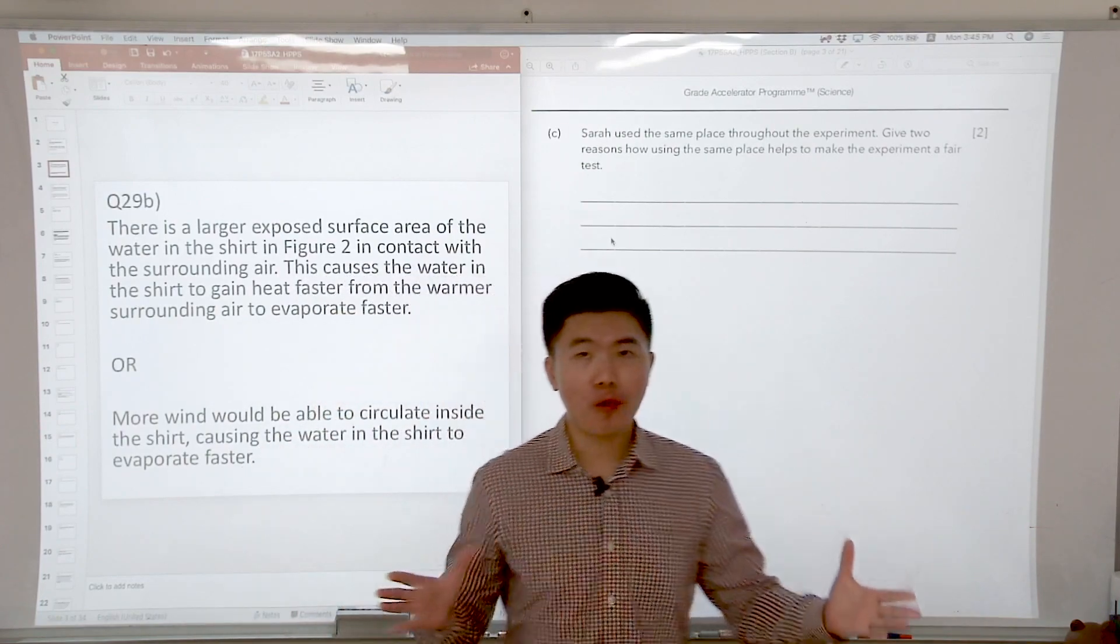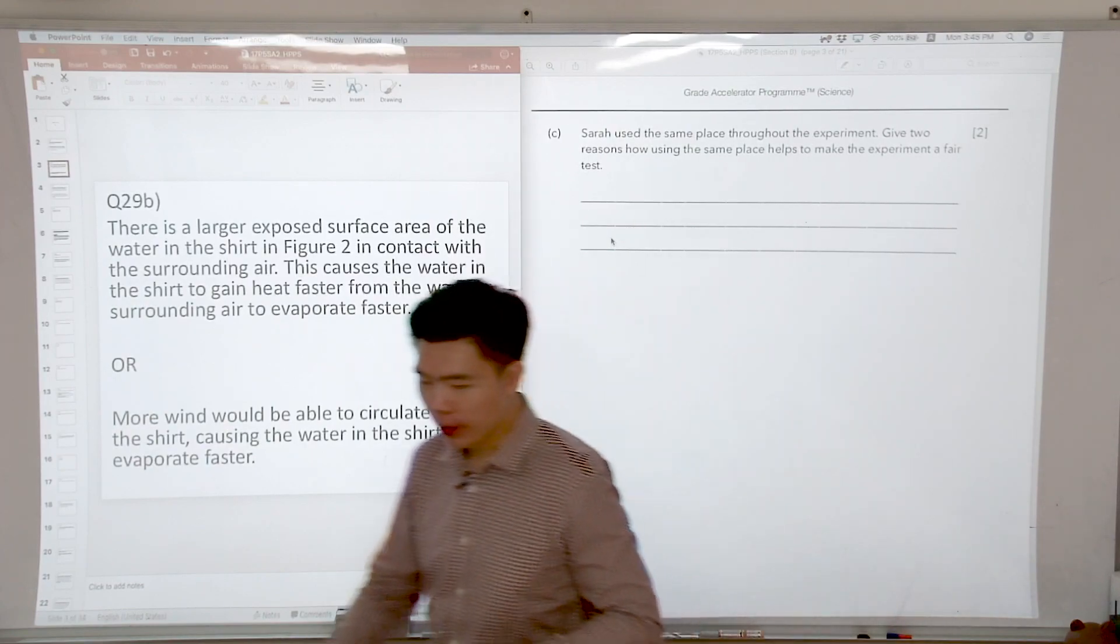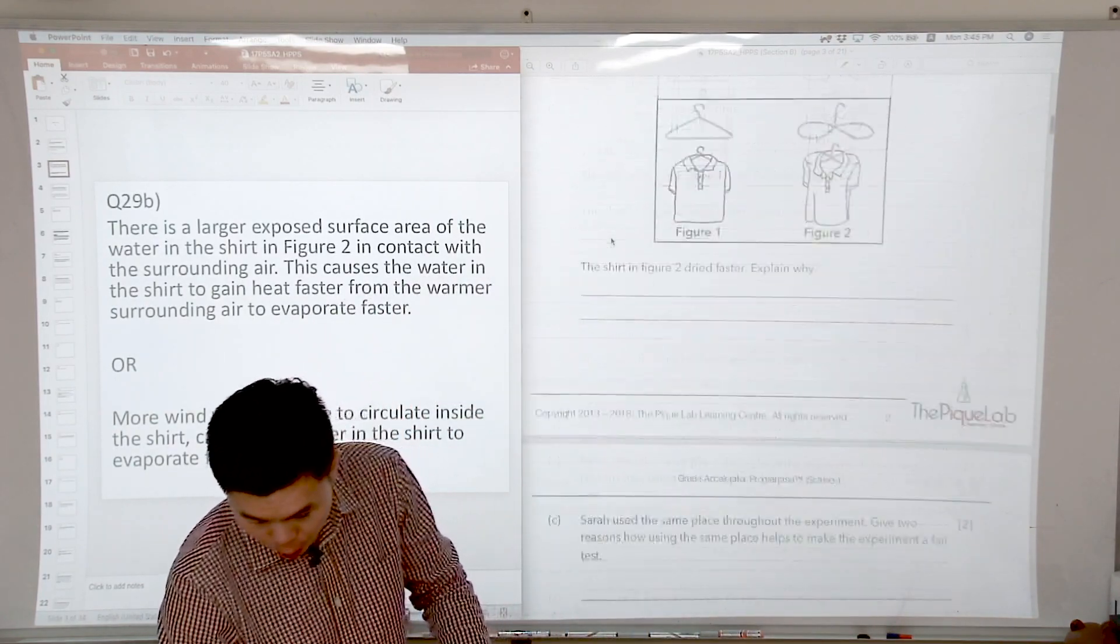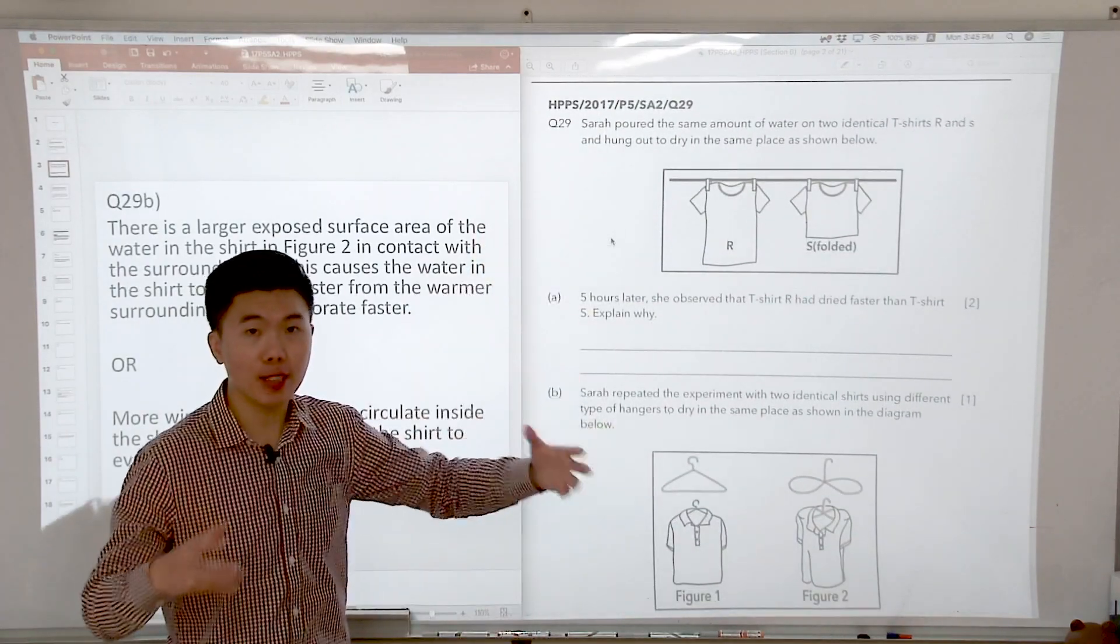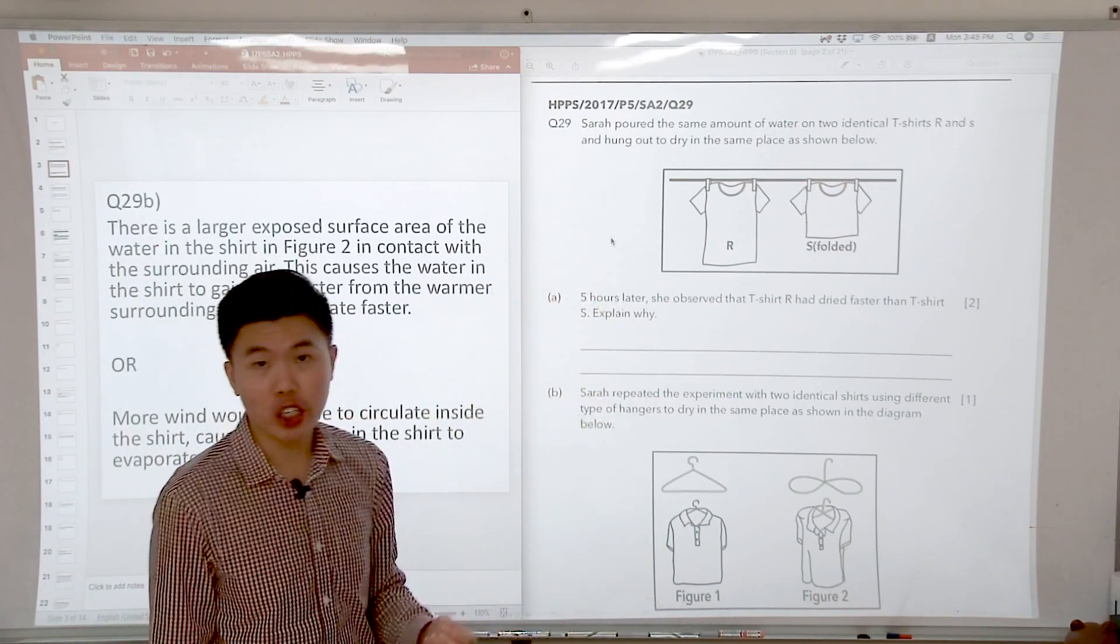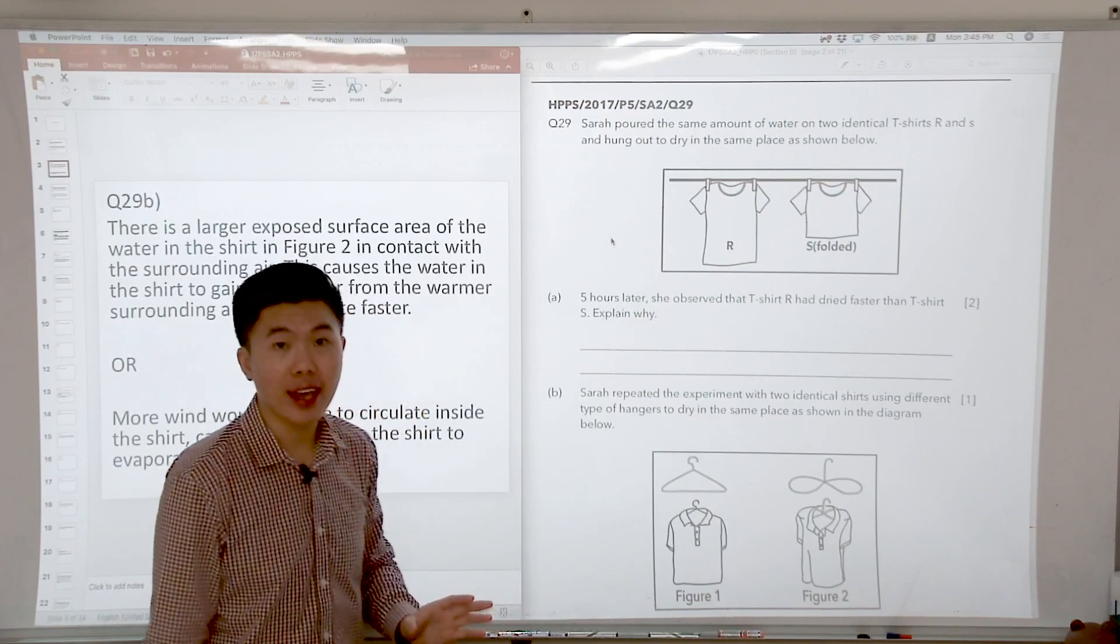Let us recall, for an experiment to be a fair test there can only be one change variable. So what was the change variable in this question over here? The change variable is the exposed surface area of the t-shirt, remember? So how does keeping it in the same place ensure that it is a fair test?